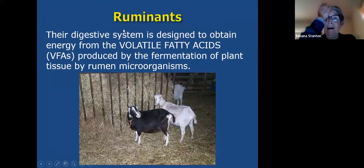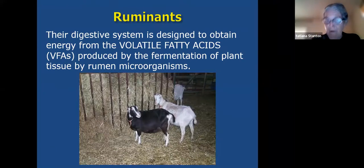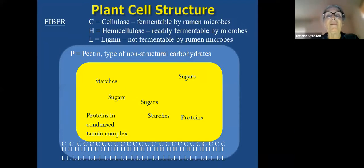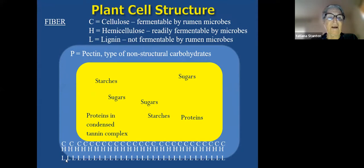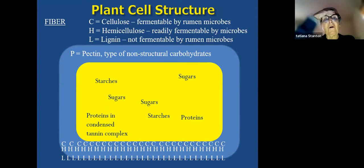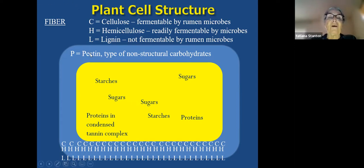Small ruminants' digestive systems are designed to obtain energy from volatile fatty acids produced by fermentation of plant tissue by rumen microorganisms. This slide, courtesy of Larry Chase, shows a plant cell. The cell wall contains primarily structural carbohydrates — cellulose, hemicellulose, and lignin — and also pectin. Although pectin is a non-structural carbohydrate, it behaves when fermented like a structural carbohydrate, tending to yield acetic acid. These cell wall carbohydrates are your structural carbohydrates — what fiber is. In a ruminant animal, they are carbohydrates because they can be broken down to yield volatile fatty acids.